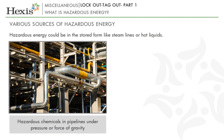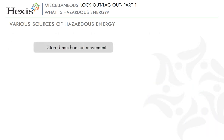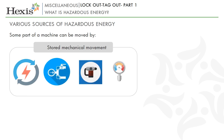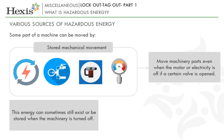Hazardous energy could be in the stored form like steam lines or hot liquids. For example, hazardous chemicals in pipelines under pressure or force of gravity. Though chemicals may not seem like stored energy in the normal meaning of the word, some chemicals like acids would cause injury if suddenly sprayed or splashed on a worker who, thinking a pipeline is empty, disconnects a pipe or opens a valve. Stored mechanical movement means some part of a machine can be moved by electricity, hydraulic fluid, air pressure, water pressure or gravity. This energy can sometimes still exist or be stored when the machinery is turned off. For example, hydraulic fluids can move machinery parts even when the motor or electricity is off, if a certain valve is opened.